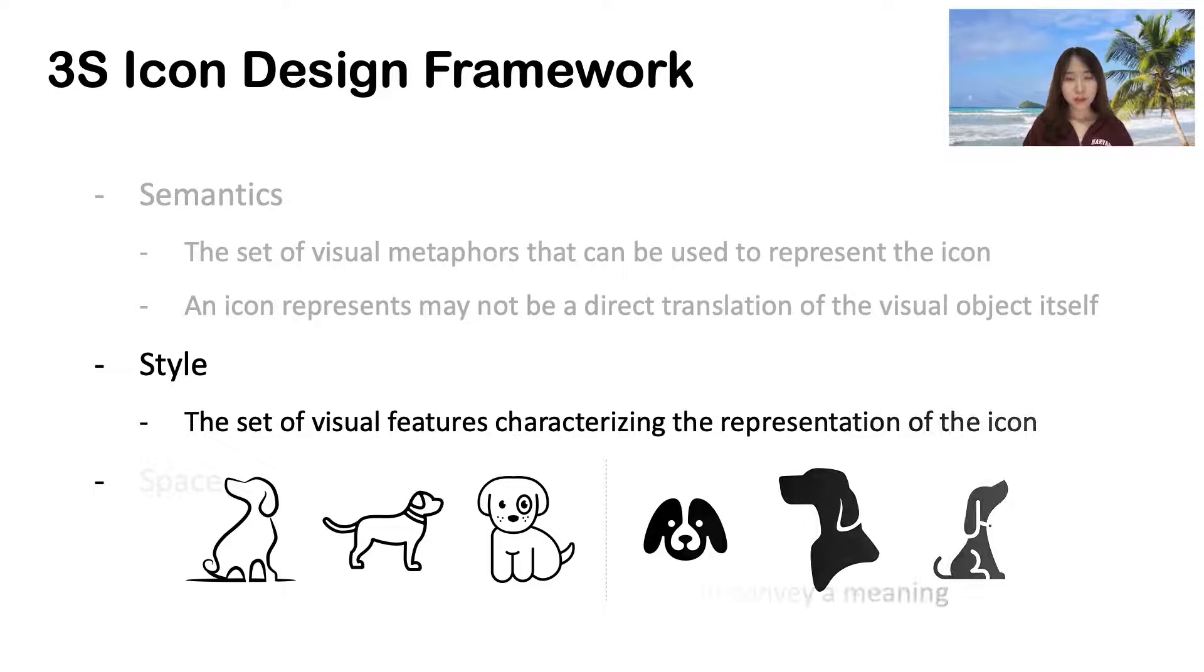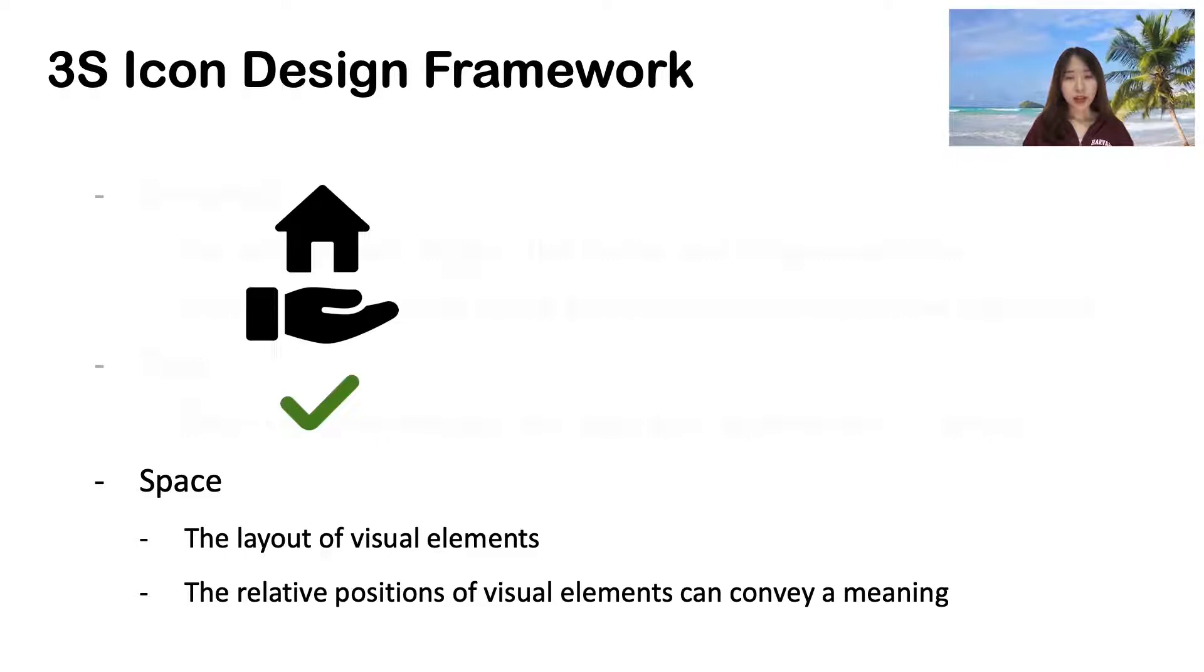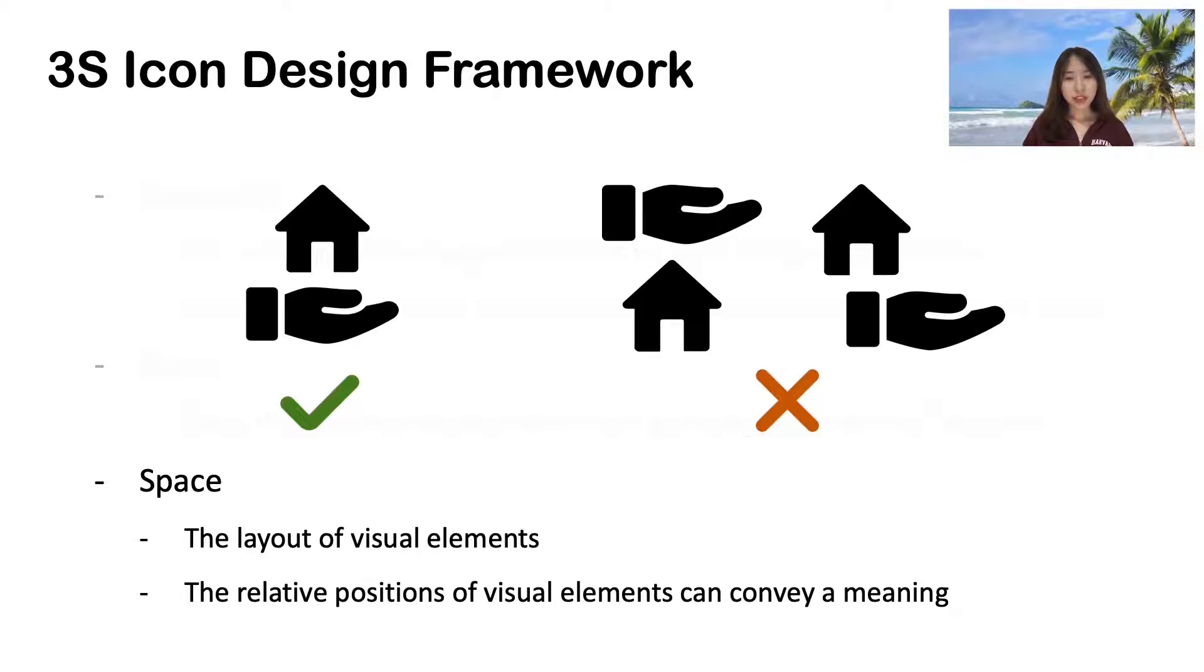For space, rather than only considering design principles such as symmetry and alignment in other graphic designs, the relative positions of visual elements within a compound icon can convey a meaning. For instance, a hand positioned below a house can indicate house insurance, whereas a different arrangement may have an alternative meaning unlike a roof. Thus, a design tool should provide scaffolding for layout decisions based on both spatial semantics and conventional design principles.